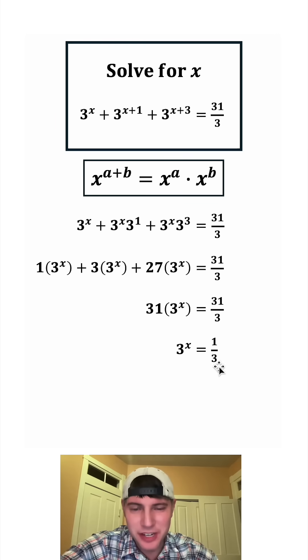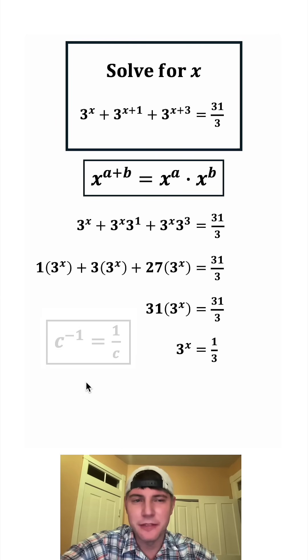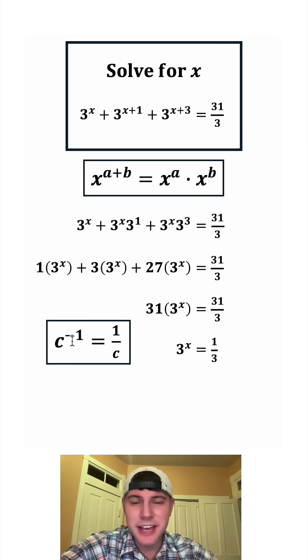And now since this 3 is in the denominator, it reminds me of negative exponents. Here are the notes right here. So we can rewrite this 1 third as 3 to the power of negative 1. And that's still going to be equal to 3 to the power of x.